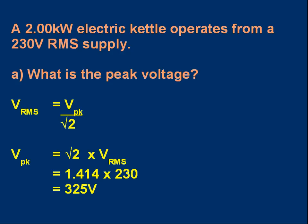OK, what's the peak voltage? V_rms = V_peak / √2, so rearranging gives V_peak = √2 × V_rms. √2 is about 1.414, and with V_rms = 230, that gives 325 volts.